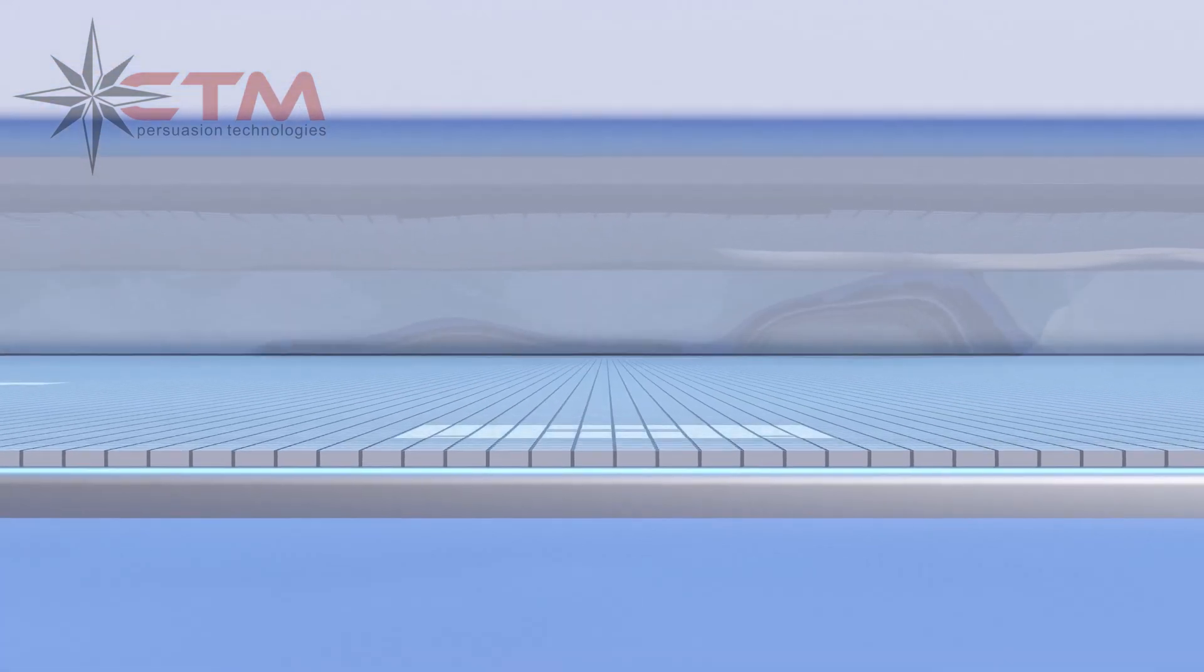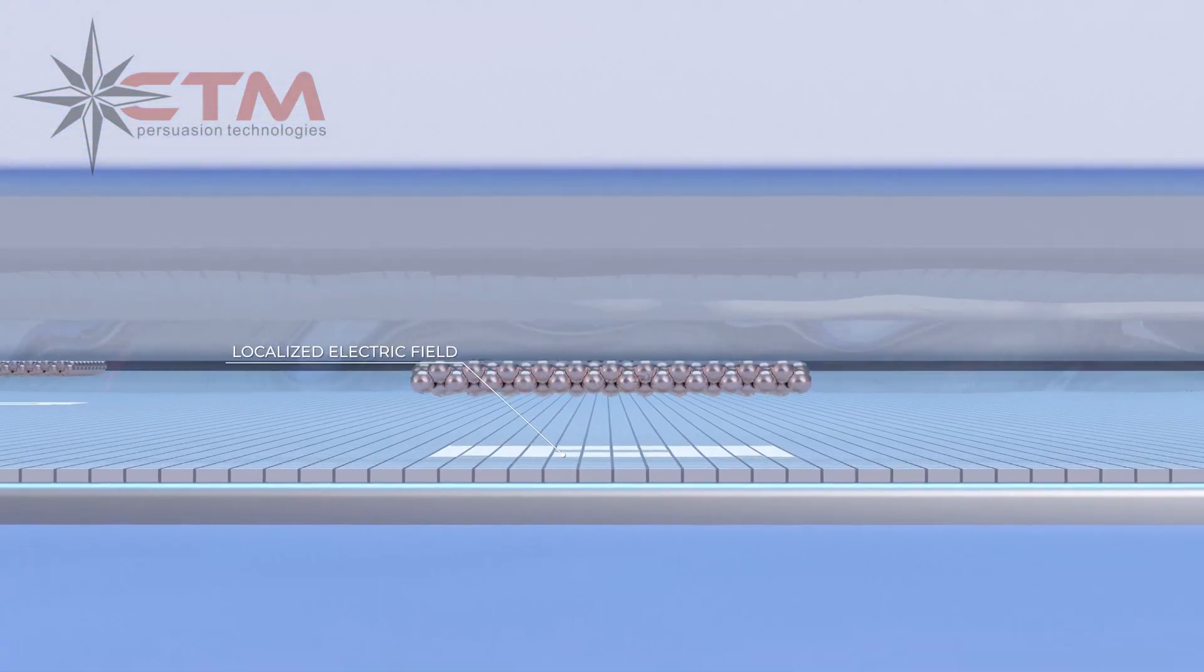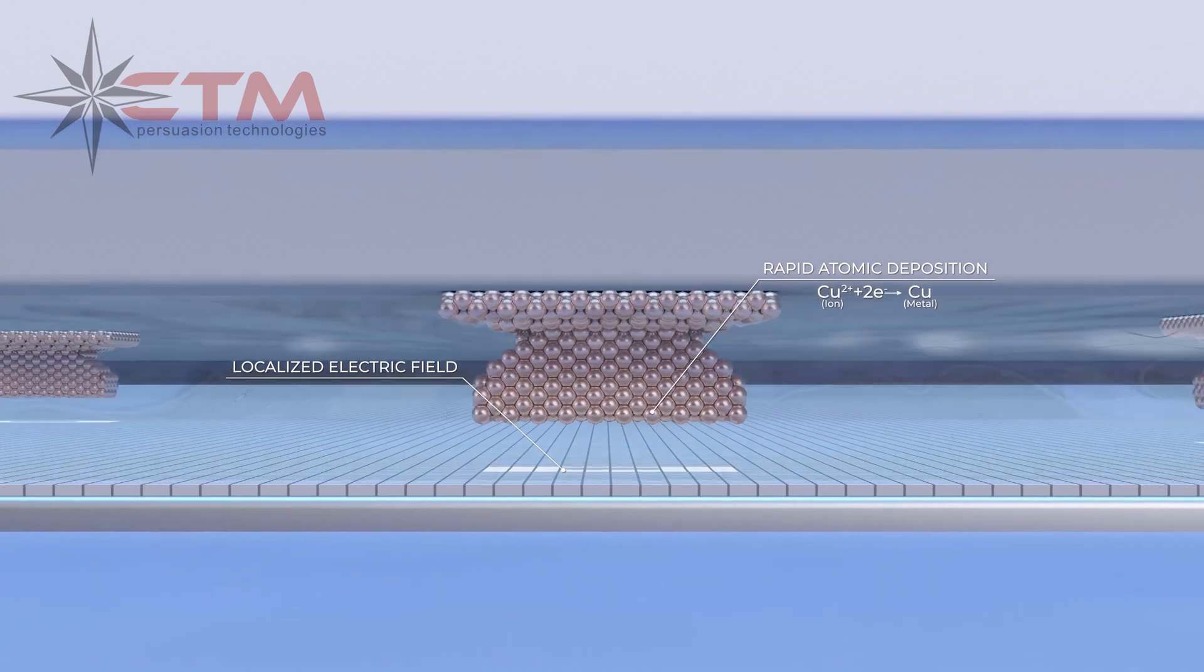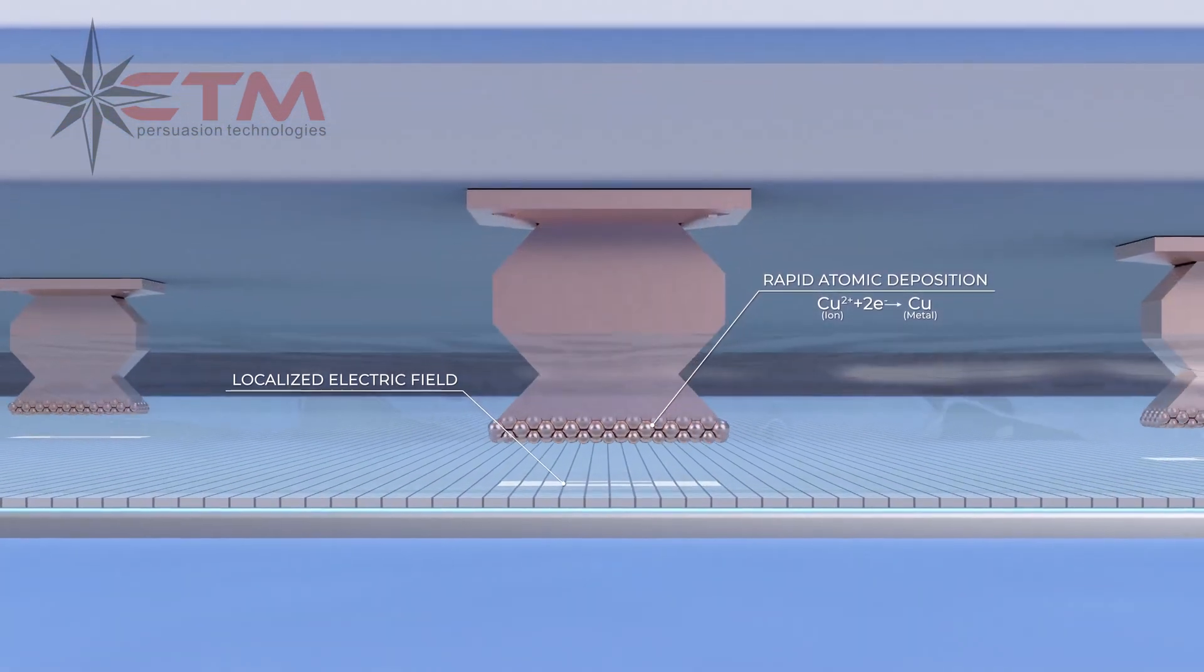Activating pixels on the printhead creates a localized electric field that drives rapid deposition of metal onto the build plate at the atomic level.